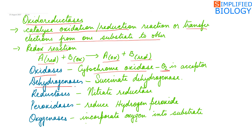Next, dehydrogenases — many examples are found in the Krebs cycle and glycolysis. One such example is succinate dehydrogenase, which catalyzes the conversion of succinic acid into fumaric acid. Reductases — for example, nitrate reductase, which converts nitrate into nitrite in nitrate assimilation.